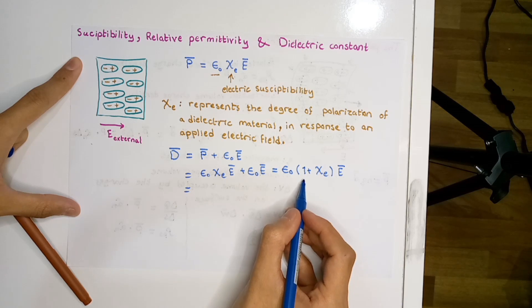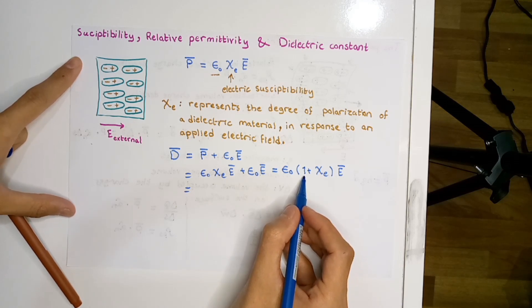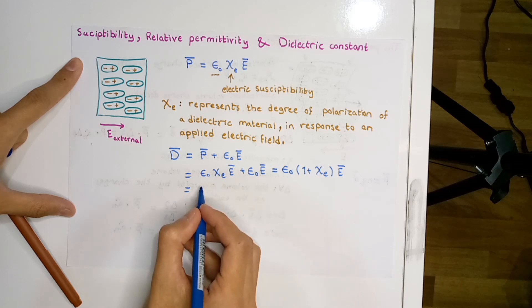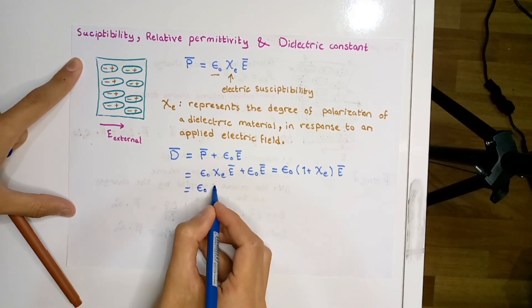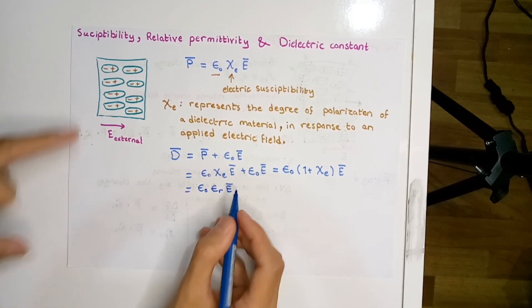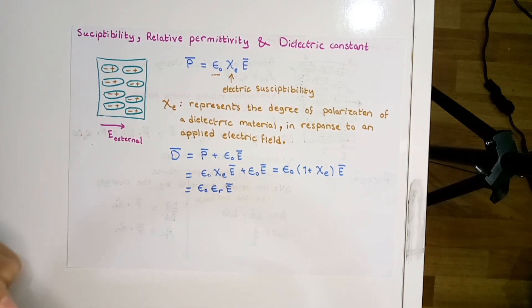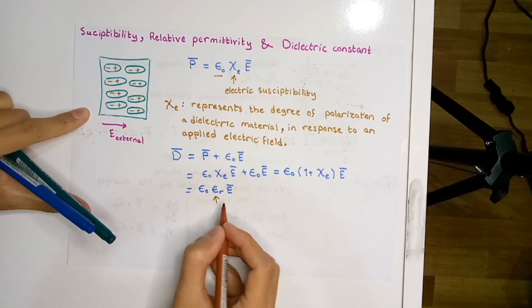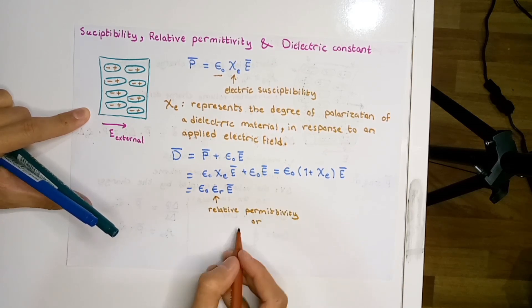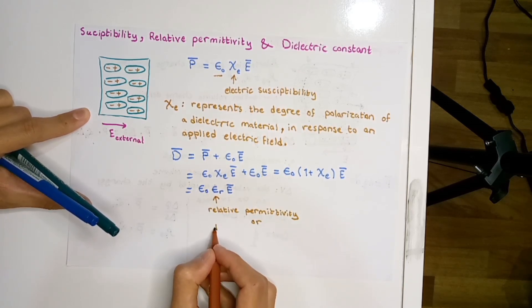In this case, I'm going to substitute 1 + χₑ by a new constant which is εᵣ. This new constant εᵣ is representing the relative permittivity, or sometimes it's called the dielectric constant.